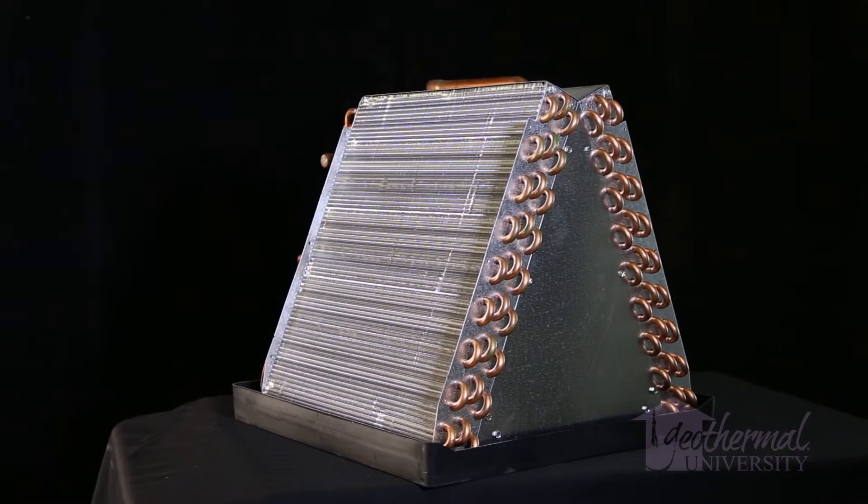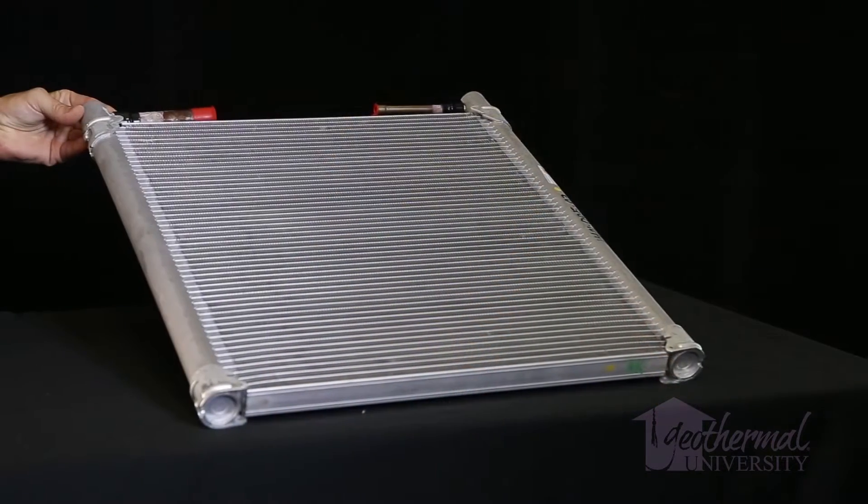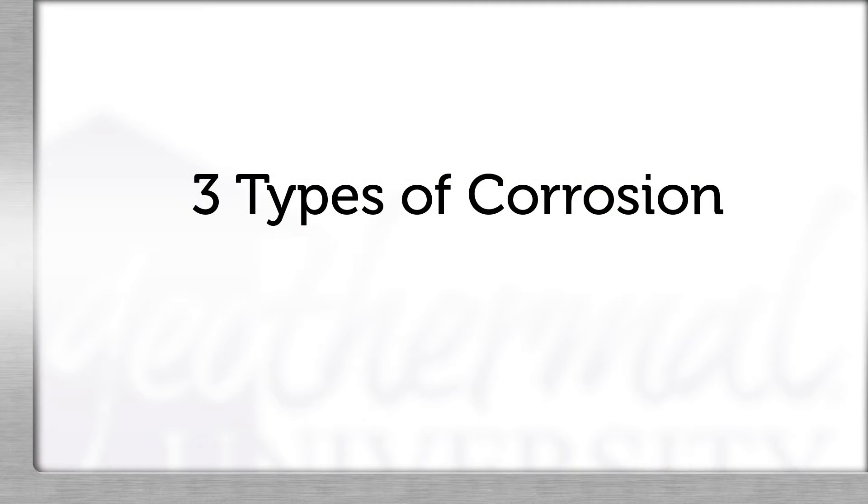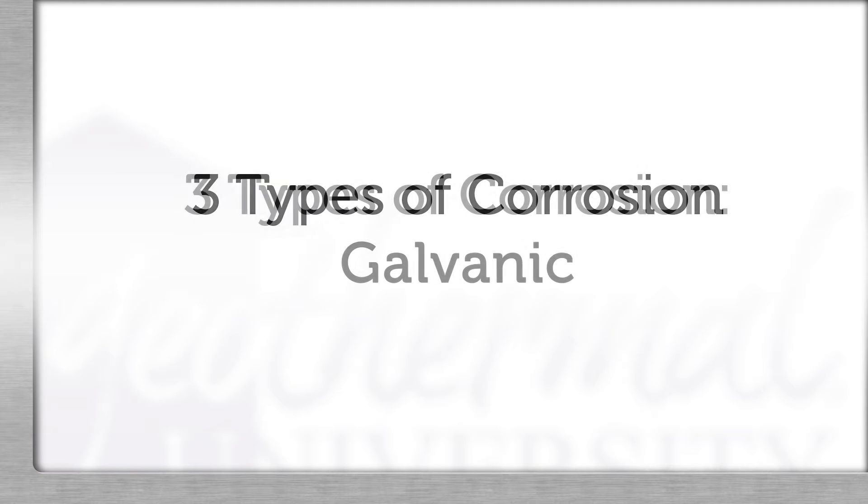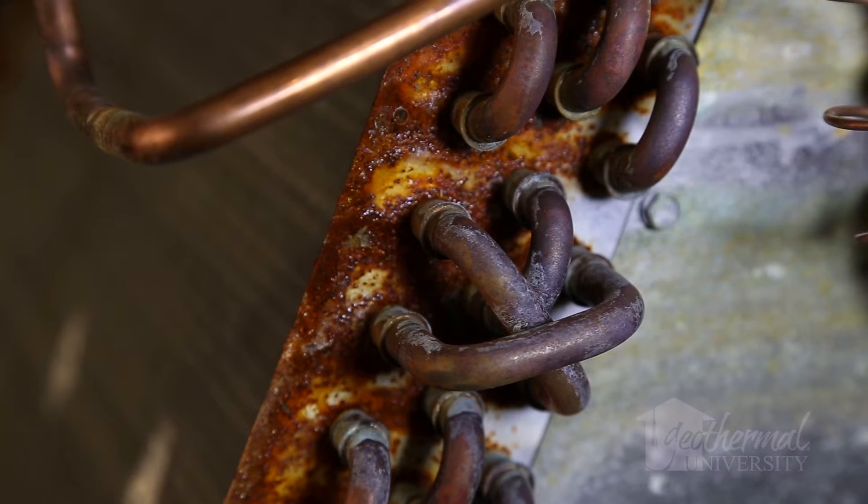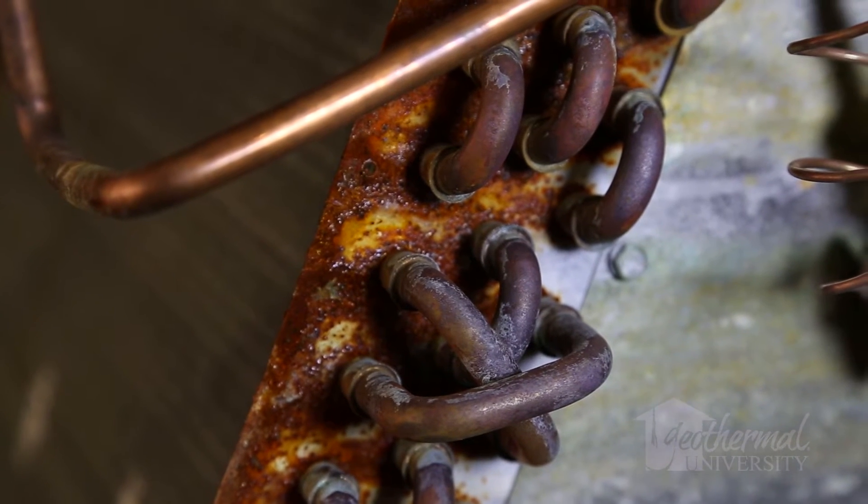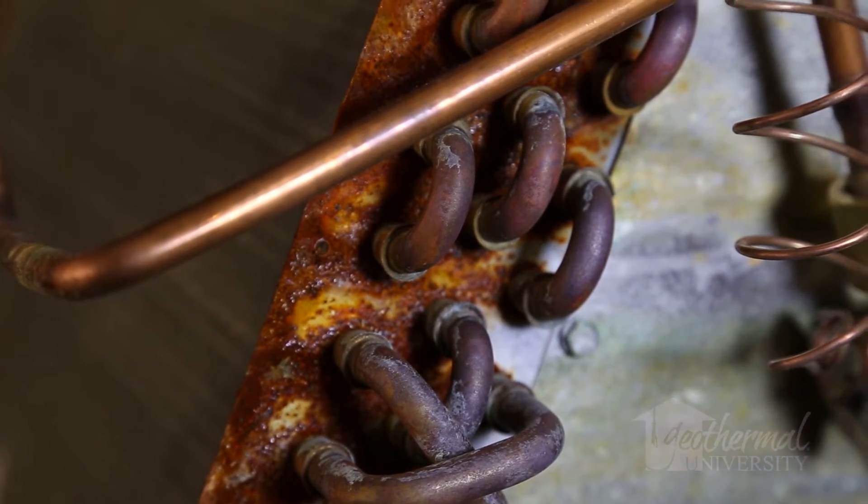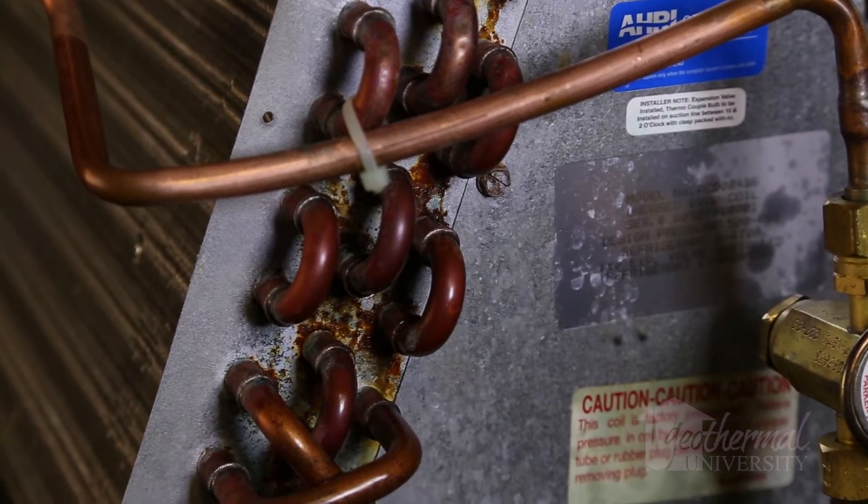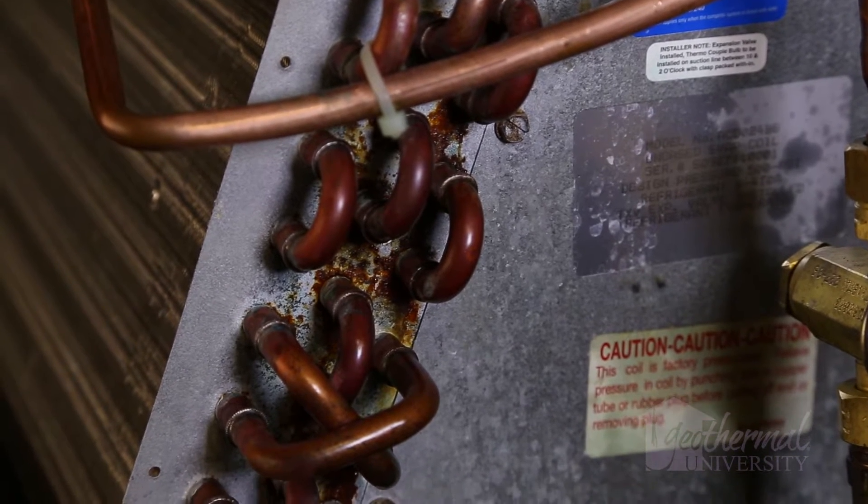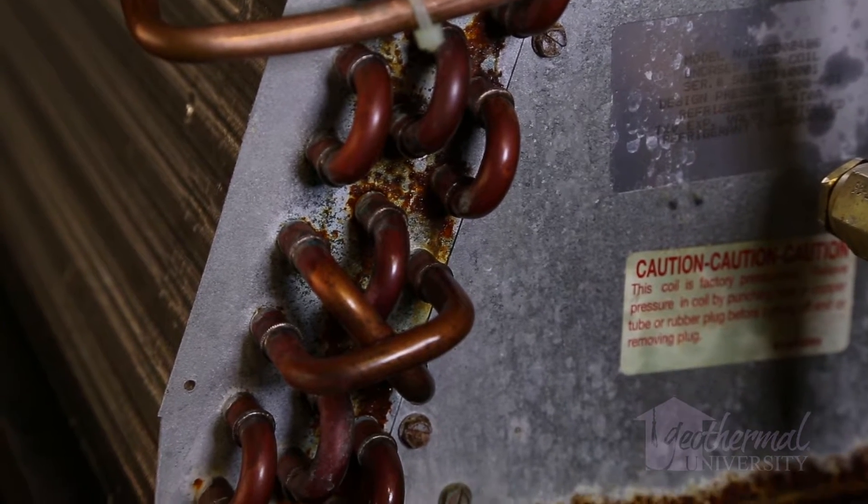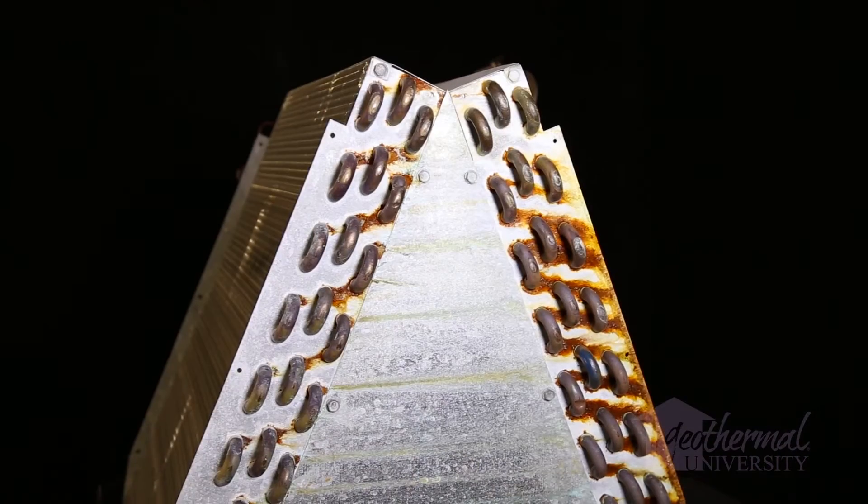Before we begin we'd like to discuss the corrosion that an air coil is subject to when installed in HVAC equipment. We'll briefly define the three kinds of corrosion present. Galvanic corrosion is an electrochemical process in which one metal corrodes preferentially to another when both metals are in electrical contact. Crevice corrosion refers to corrosion that naturally occurs in tight mechanical bonded junctions such as where aluminum fins are pressed into copper tubes. The spaces between the dissimilar metals are referred to as crevices.